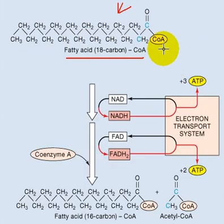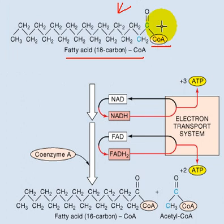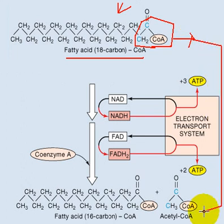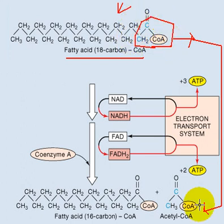The next step: this coenzyme A will take a two-carbon molecule from the fatty acyl-CoA and detach itself. When this two-carbon unit is detached with the coenzyme A, we call it acetyl coenzyme A. So from the 16-carbon chain, we removed two carbons with the coenzyme A, and the result is acetyl-CoA.